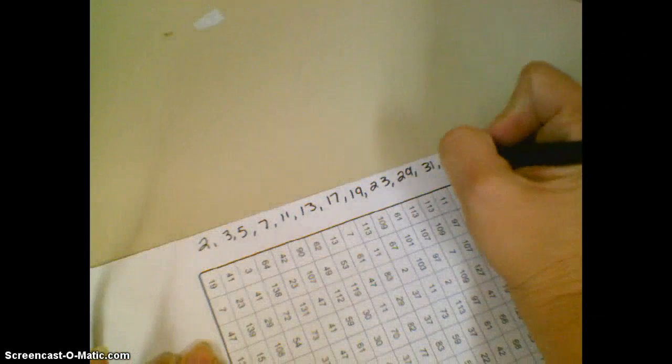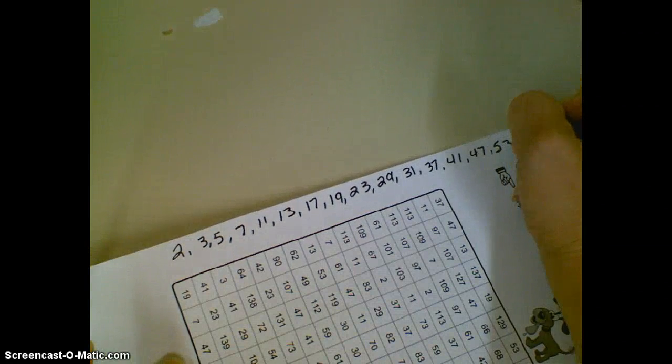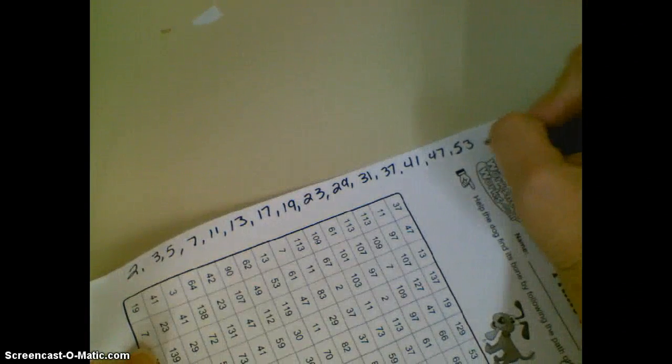31, 37, 41, 47, 53, 59. Need another row here.